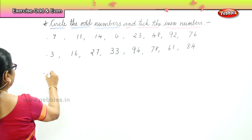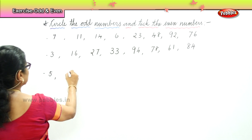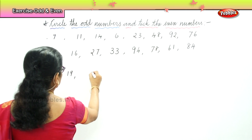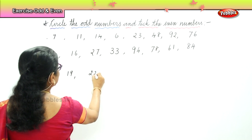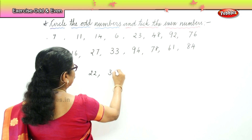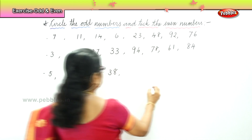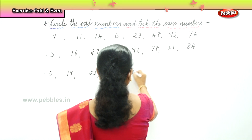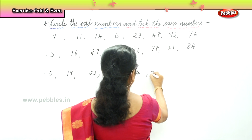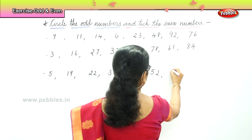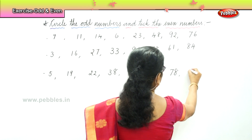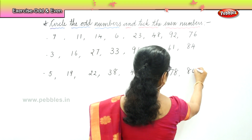Another set. Set C: We have 5, 16, 19, 22, 48, 44, 52, 78, and 88.